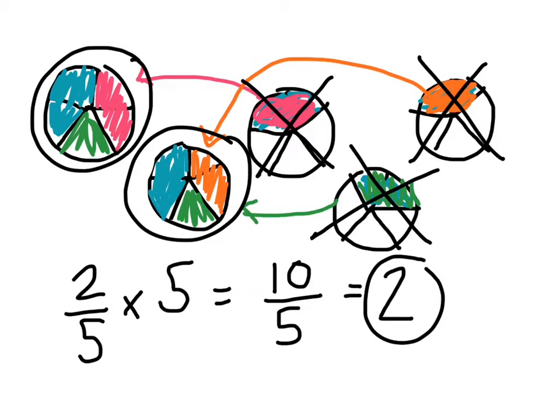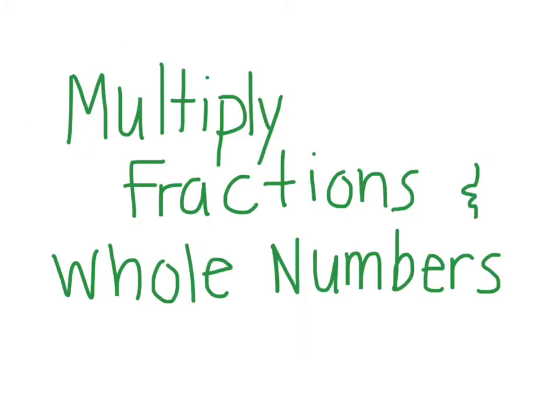When we multiply fractions and whole numbers, we have 2/5 times 5. How do we do that just with plain math? Very easily. We simply look at 5 and say 5 is the same as 5/1.